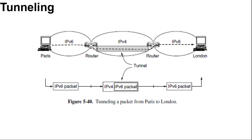Handling the general case of making two different networks interwork is extremely difficult. However, there is a common special case that is manageable even for different network protocols, and this case is where the source and destination are on the same type of network.